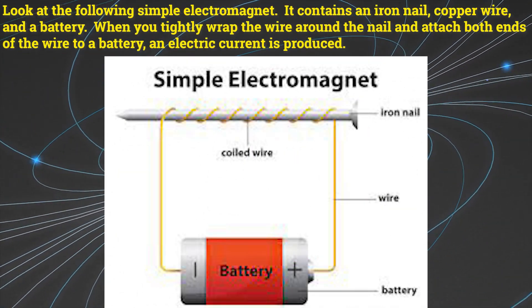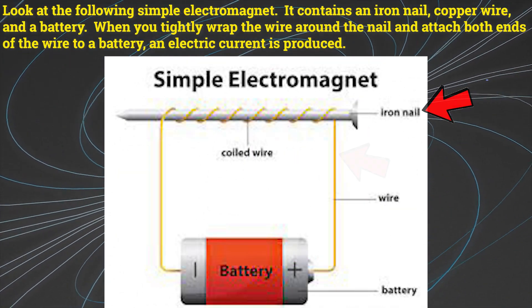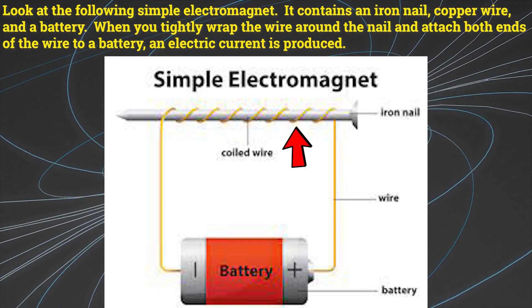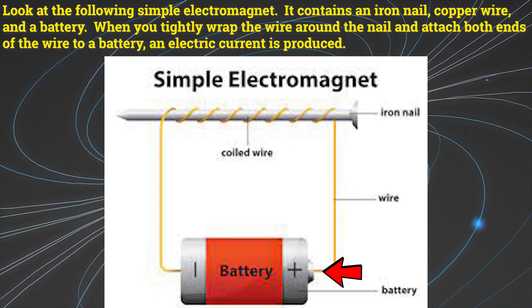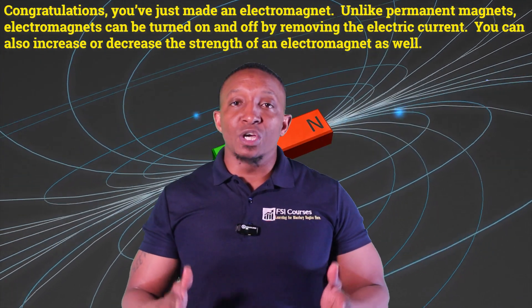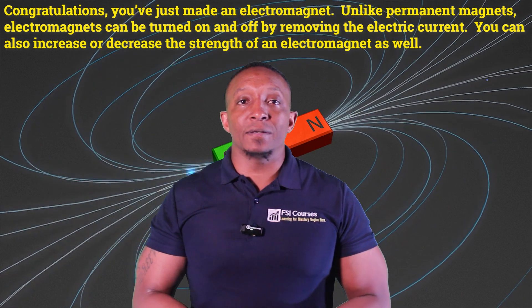Look at the following simple electromagnet. It contains an iron nail, copper wire, and a battery. When you tightly wrap the wire around the nail and attach both ends of the wire to a battery, an electric current is produced. Congratulations, you've just made an electromagnet.